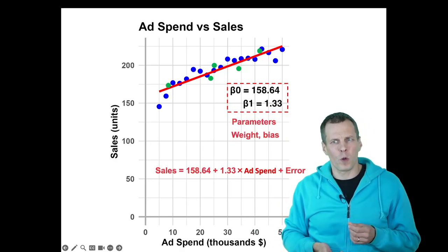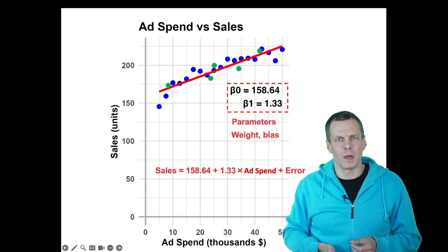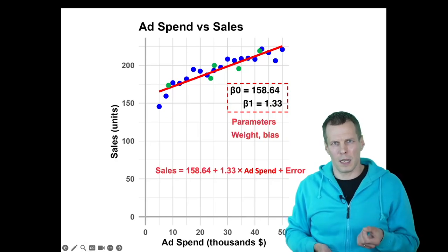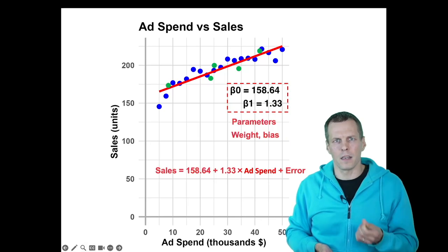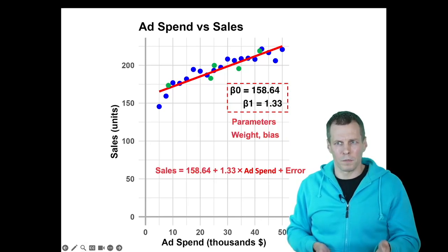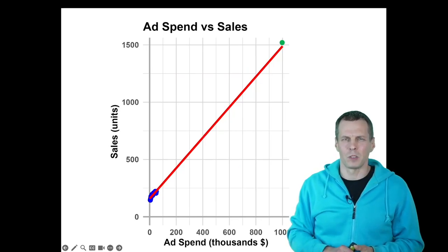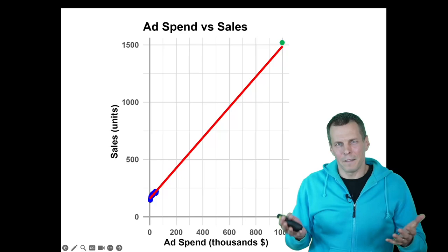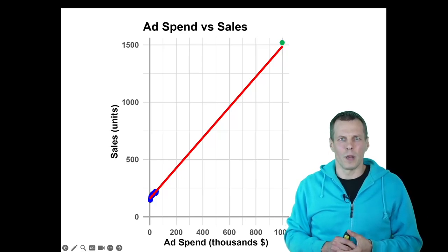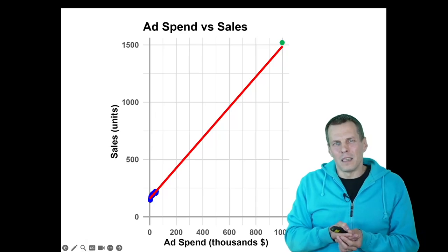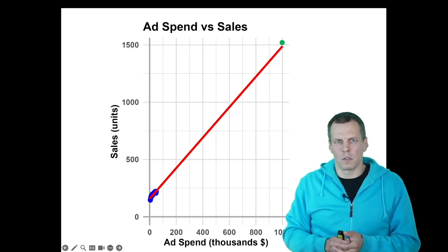Problems occur when we start to extrapolate. If we are asking this model to predict how much we would sell if we actually increased our advertisement spending to a million. Here's the data. We can predict what the sales would look like if we advertised for a million dollars. Now this model is not very trustworthy for this kind of predictions.